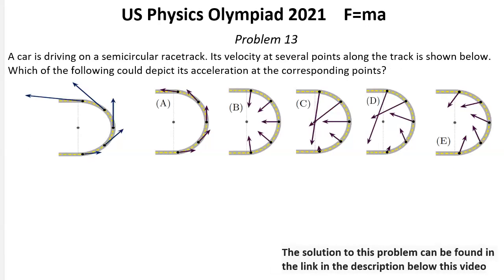Problem number 13. A car is driving on a semicircular race track. Its velocity at several points along the track is shown below. Which of the following could depict its acceleration at the corresponding points?